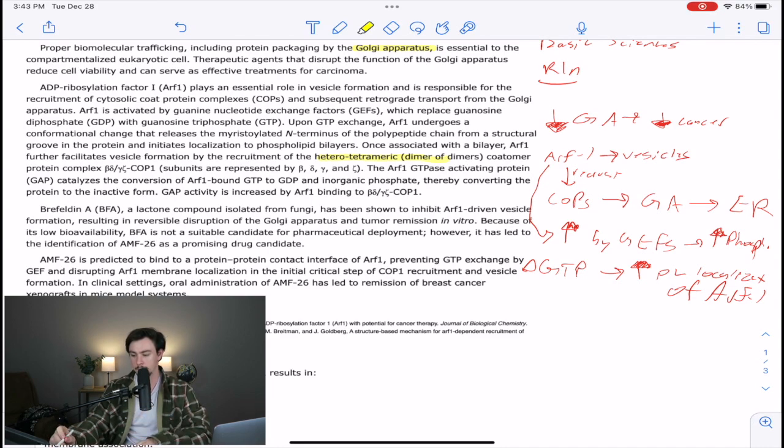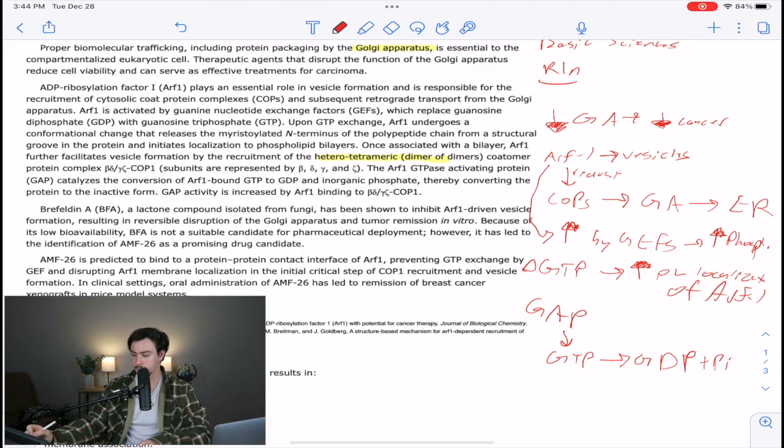ARF1-GTPase activating protein, or the GAP, catalyzes the conversion of ARF1-bound GTP to GDP and inorganic phosphate, thereby converting the protein to the inactive form. That's pretty big right there. It says this GAP protein, which is the ARF1-GTPase, converts ARF1-bound GTP to GDP. So we can identify what type of protein that is and inorganic phosphate, thereby converting the protein to the inactive form. So that leads to inactive ARF1. So now I know that active ARF1 is phosphorylated or attached to GTP, inactive is attached to GDP.